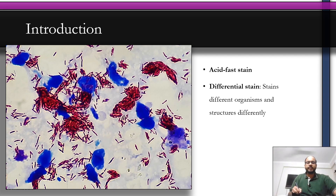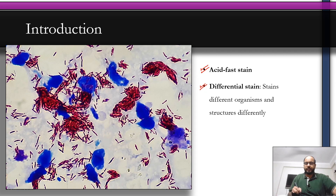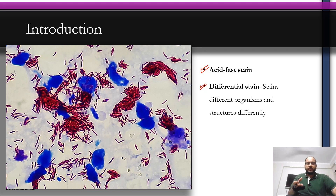Ziehl-Neelsen staining is also known as an acid-fast stain. We discussed last week that acid fastness is a property of Mycobacterium leprae that allows it to resist decolorization when exposed to acid alcohol. That is why the ZN stain is known as an acid-fast stain — it is used to stain acid-fast bacteria. ZN stain is a differential stain, meaning it stains different structures differently.